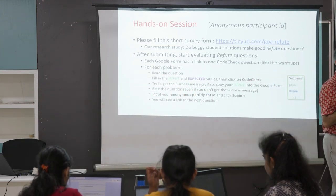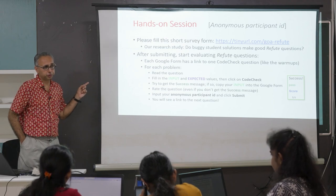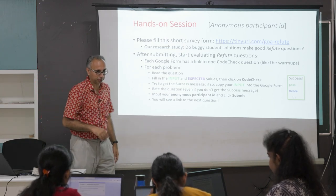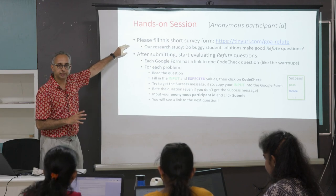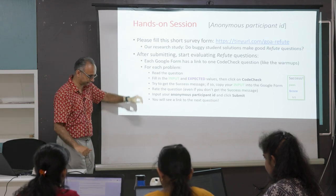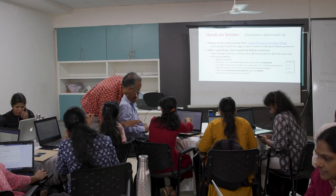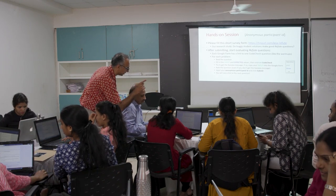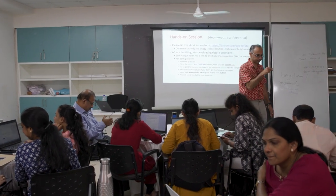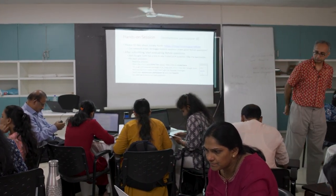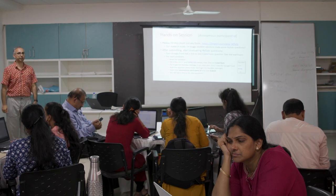If anyone gets stuck on any step, please raise your hand. You can also do this on a phone, though a laptop is better. If you've submitted the first survey, you should see the link to the next question. Try the CodeCheck problem, then answer the Google form. The difficulty rating is 1 to 5: 1 means almost any example would be a counter-example, 5 means you have to really think hard to find one.